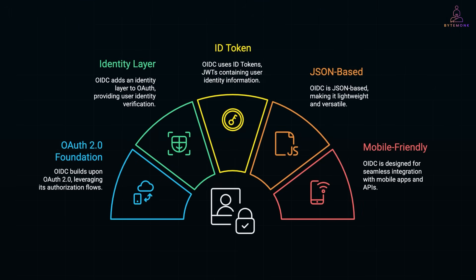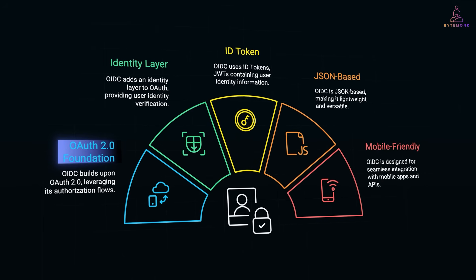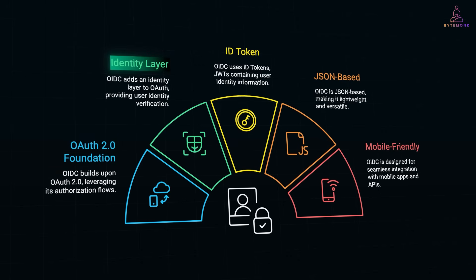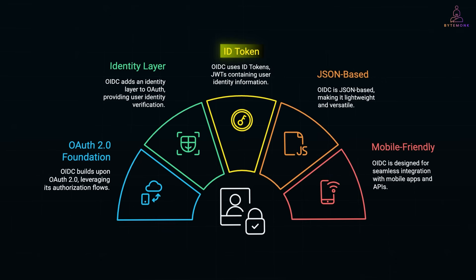If SAML is the veteran of enterprise web SSO, OIDC is the modern, API-friendly option. OIDC is actually built on top of OAuth 2.0. OAuth itself handles authorization — letting an app act on your behalf — but it doesn't define how to prove who the user is. OIDC adds that missing identity layer. It uses the OAuth token flow, but in addition to access tokens, it returns an ID token — a JSON Web Token, or JWT — that contains the user's identity information signed by the identity provider.